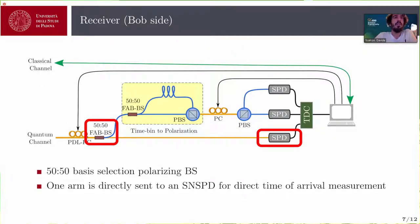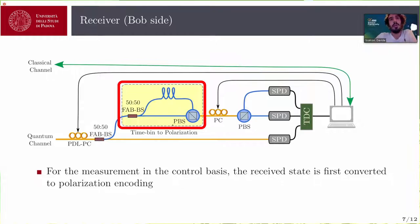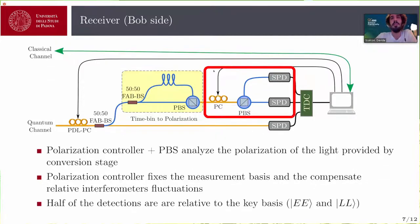Then the light is attenuated down to the single photon level and sent to the quantum channel. At the receiver, the basis choice is made passively with a fast-axis blocking beam splitter. They send half of the light directly to the SNSPD and the other half to the conversion stage as I mentioned before. So at this point, the light is probably converted back into polarization states that can be measured with the scheme here, the simple scheme made of a polarization controller and a PBS. And here, I want to stress out that the polarization controller is needed both to select the basis and also to compensate the relative phase of the two interferometers.